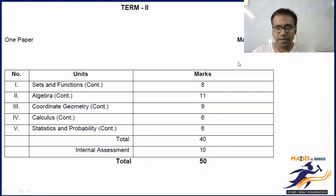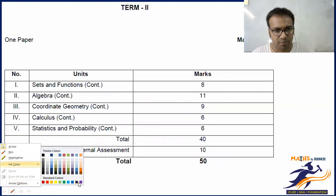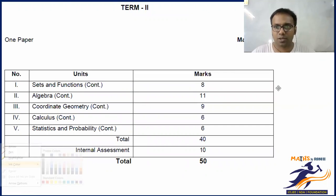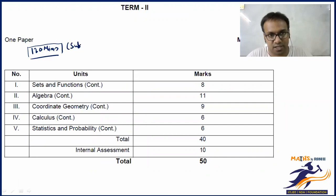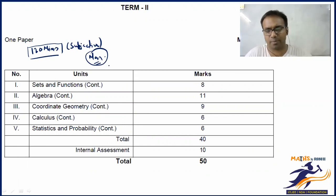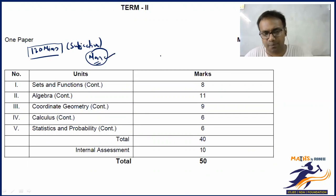In Term 2, you again have one paper of 40 marks. The duration is 120 minutes - a two-hour test. Term 1 is proposed to be objective and Term 2 is proposed to be subjective. Term 2 should be somewhere in the month of March, although it varies school to school - some start at the end of February, most start in March. It has been proposed as March.